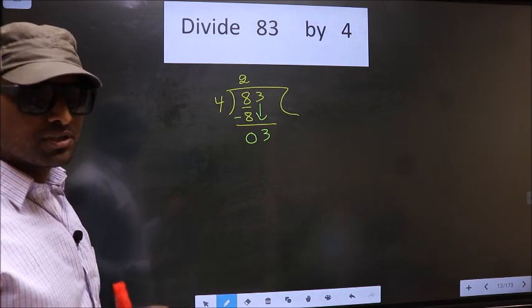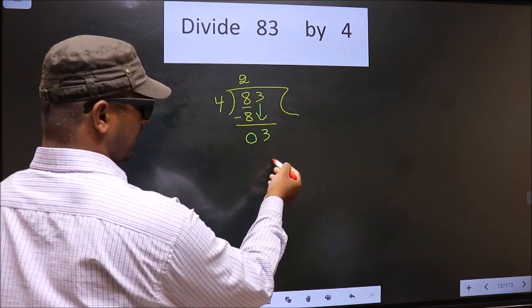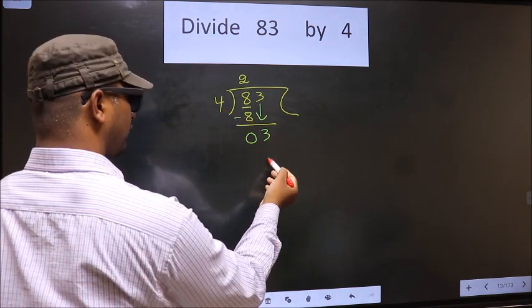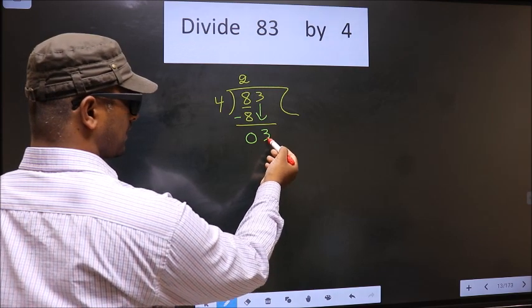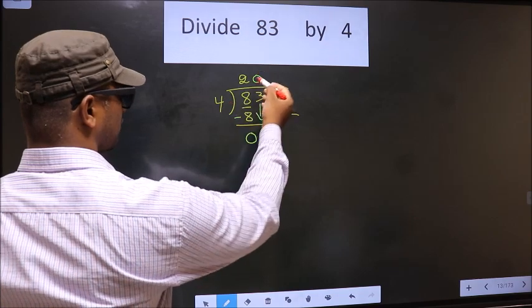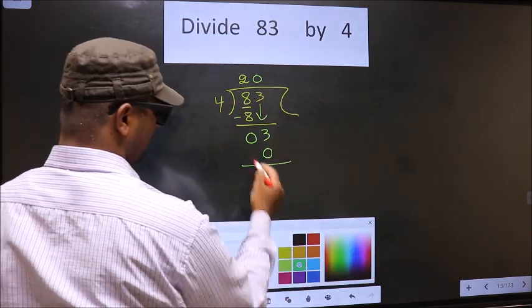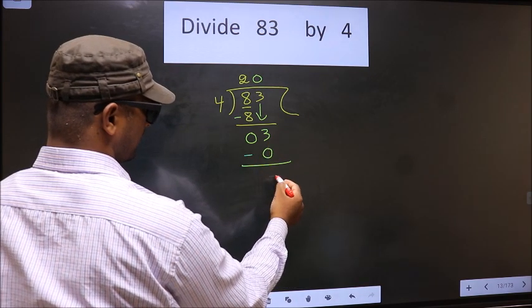Instead what you should think of is what number should we write here? If we write 4 that will become larger than 3. So what we do is we take 0 here. So 4 into 0, 0. Now you subtract 3 minus 0, 3.